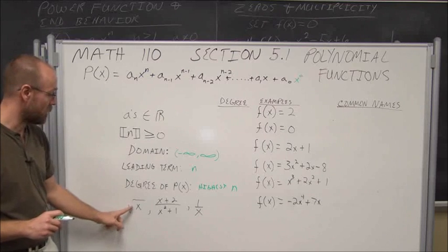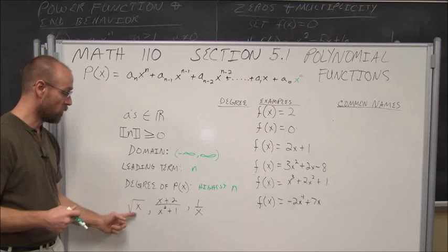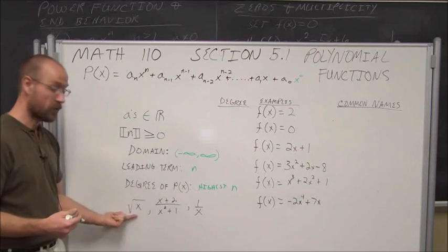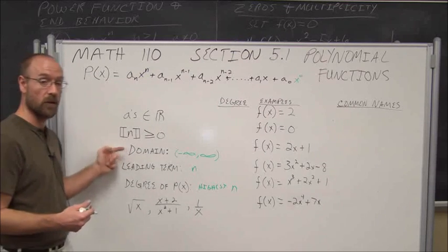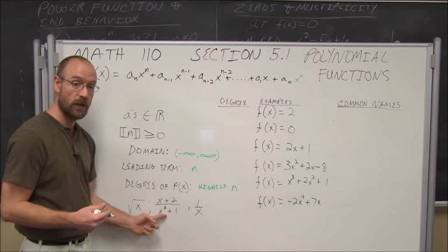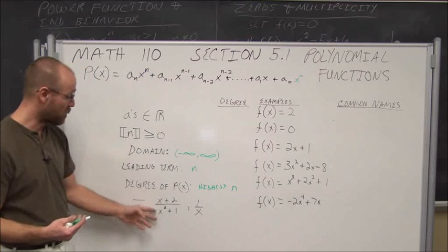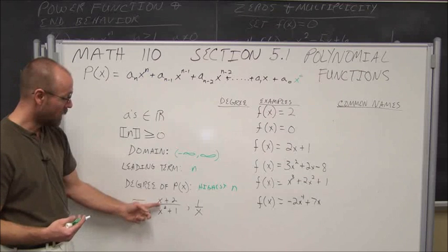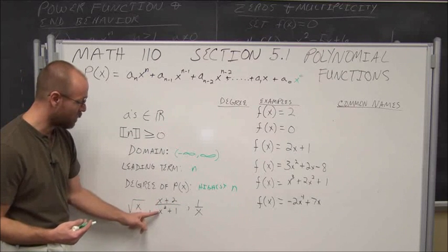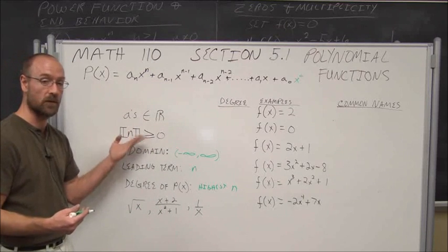I want you to note that these are not polynomials. First, the square root of x would be x to the 1/2 power — not an integer — so that excludes it. It also has a domain restriction, whereas polynomial domains are always all real numbers. Similarly, a function with x in the denominator has a domain restriction; reducing it gives x to a negative power, which is not greater than or equal to 0.